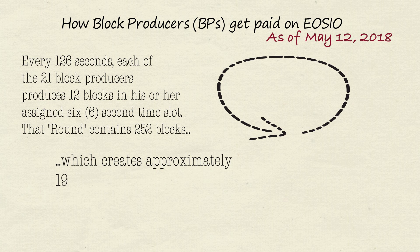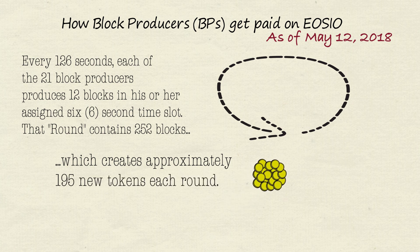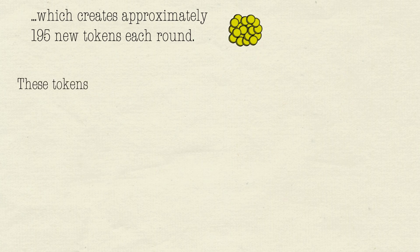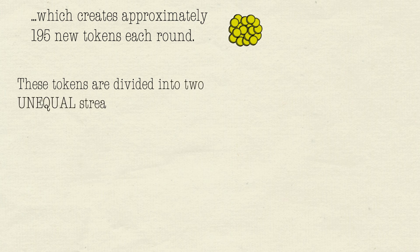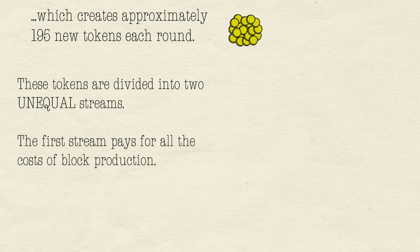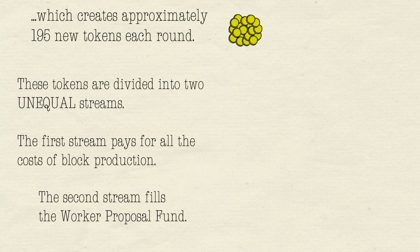That creates about 195 new tokens each round, at least at first. Inflation means it will be larger later. These tokens are then divided into two unequal streams. The first stream pays for all the costs of block production, and the second stream fills the worker proposal fund.